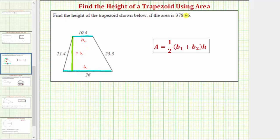Because we know the area, we can now set up an equation using the area formula to determine the height. The area is equal to one-half times the quantity b sub one plus b sub two, which should be the quantity 26 plus 10.4 times the unknown height, and this must equal the given area of 378.56 square units.